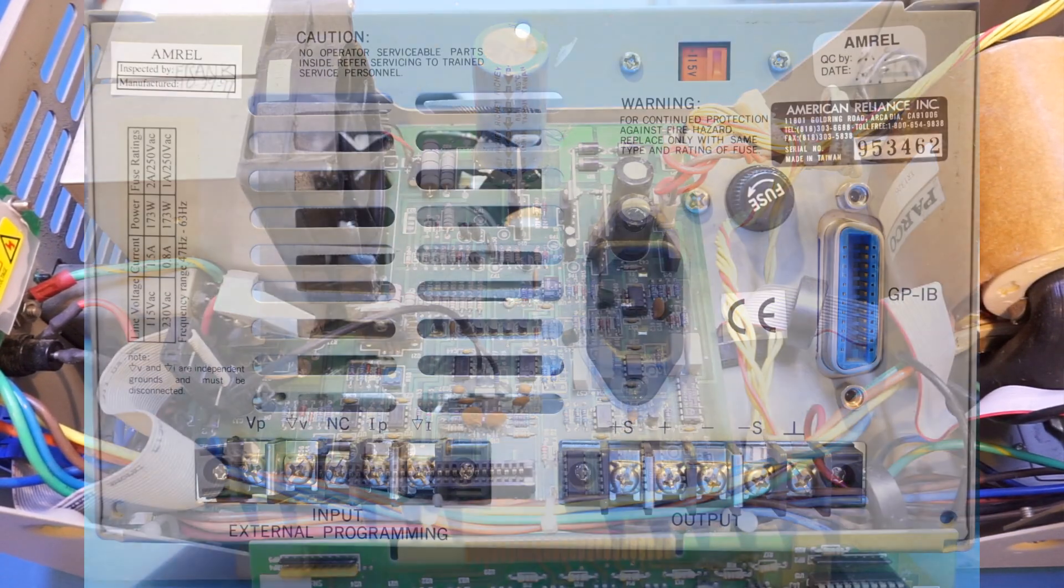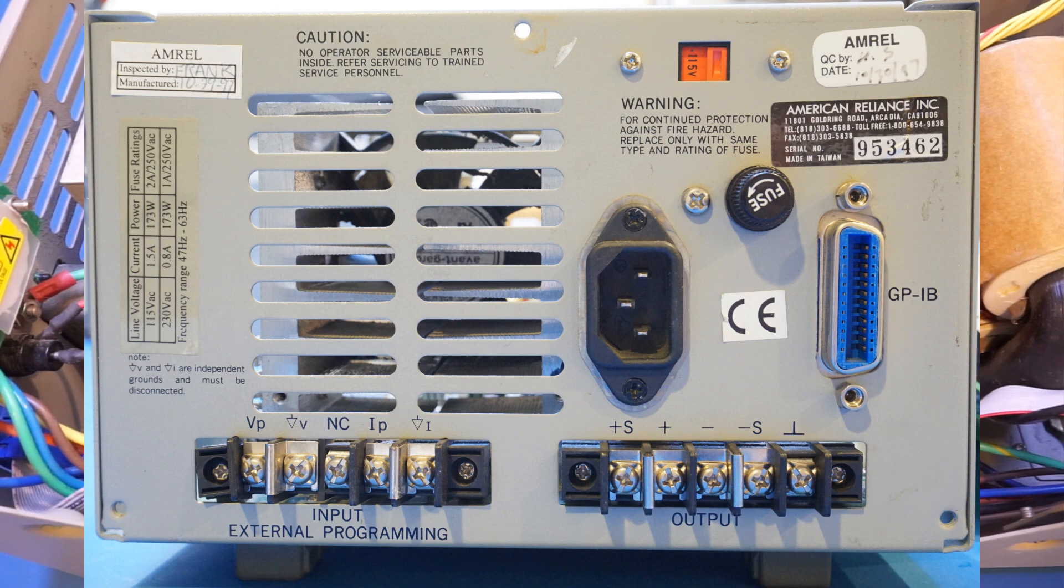By the way, if you look at the back of the unit, you will see what I meant earlier. The sensing terminal is actually strapped onto the power output, so by default it is not using the remote sensing but rather local sensing. Also you can see the GPIB port back here.